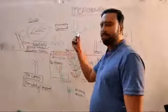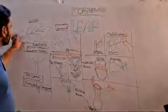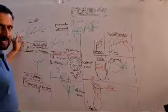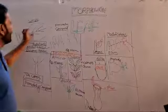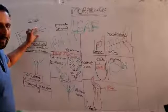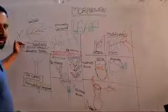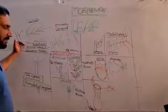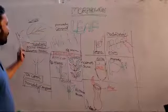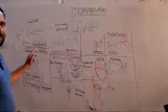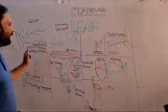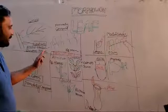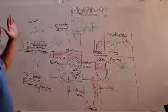In the leaf, leaves are developed at every node. The basal part is called leaf base, the stalk part is called petiole, and the green expanded part is called lamina. On either side of the leaf base, stipules are present. Generally, pulvinus leaf base is present in Fabaceae family members; sheathing leaf base is present in grasses.